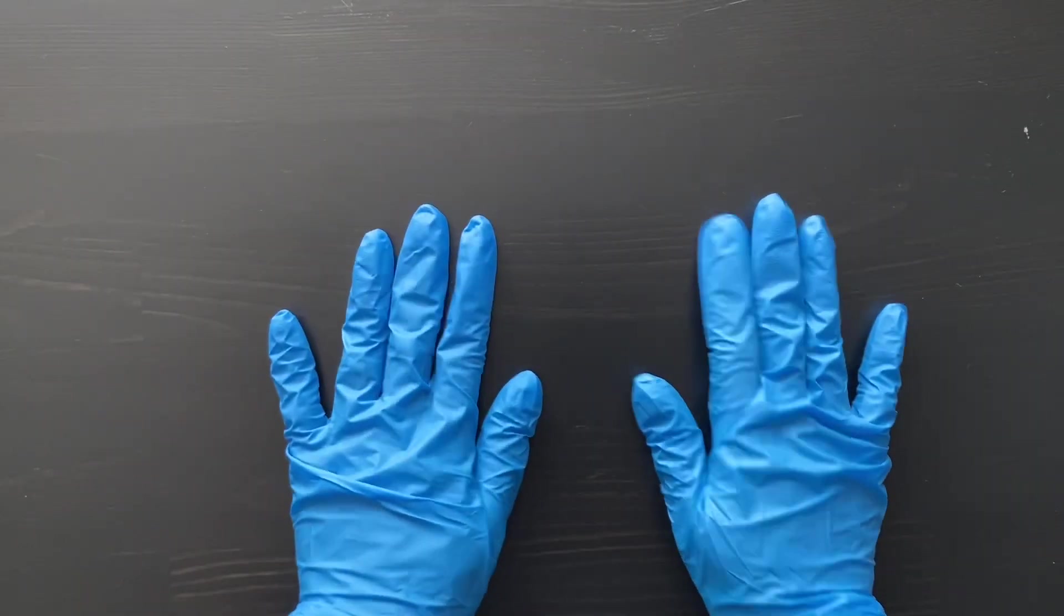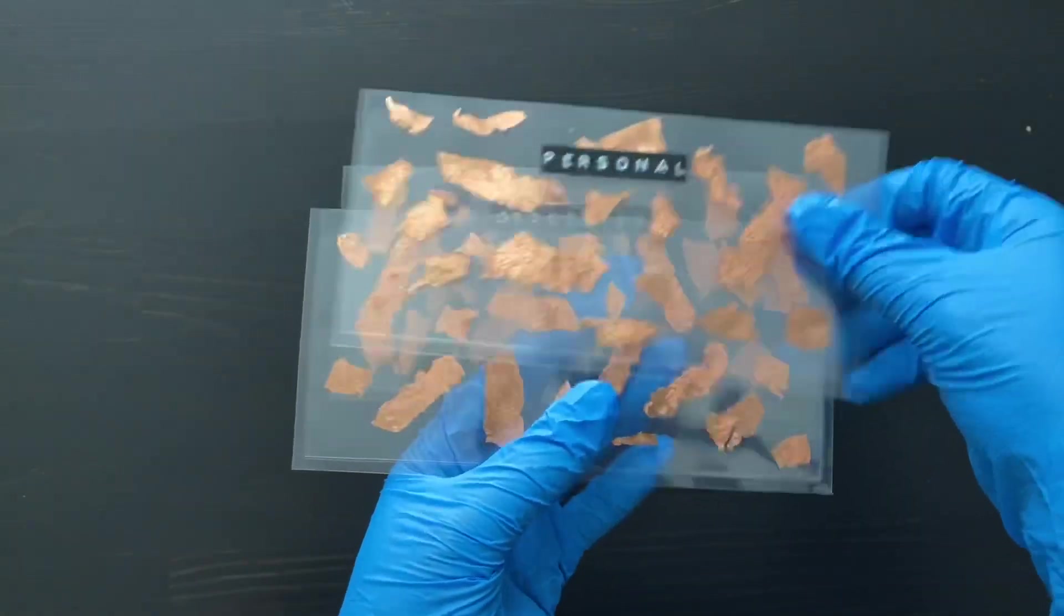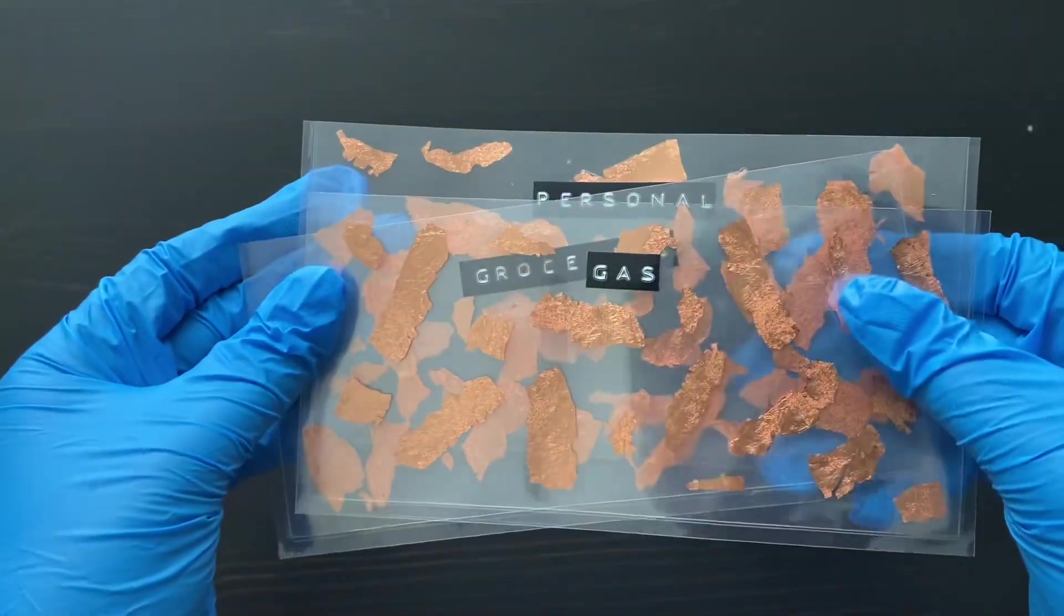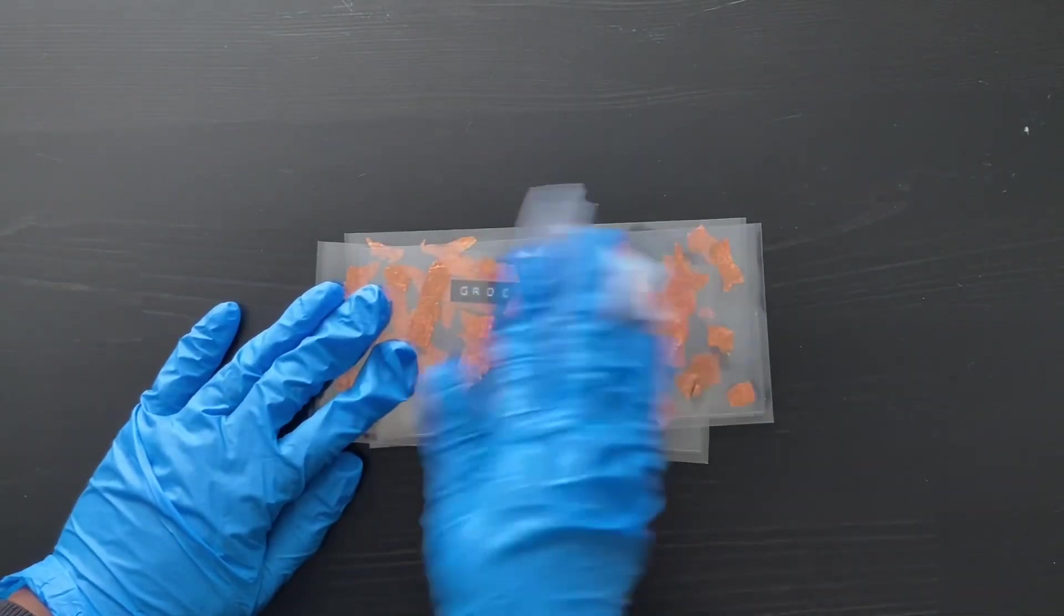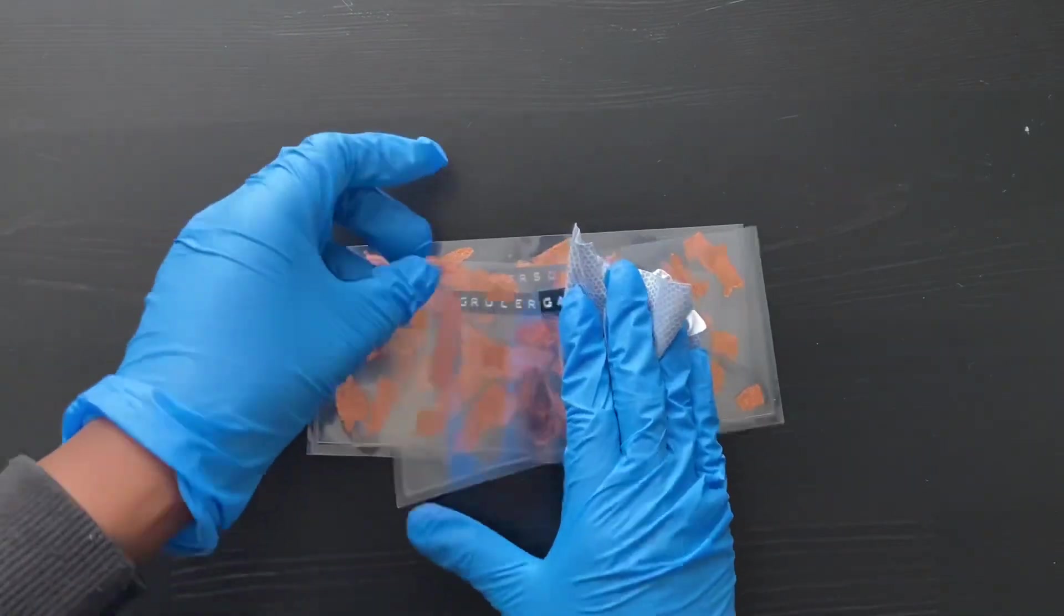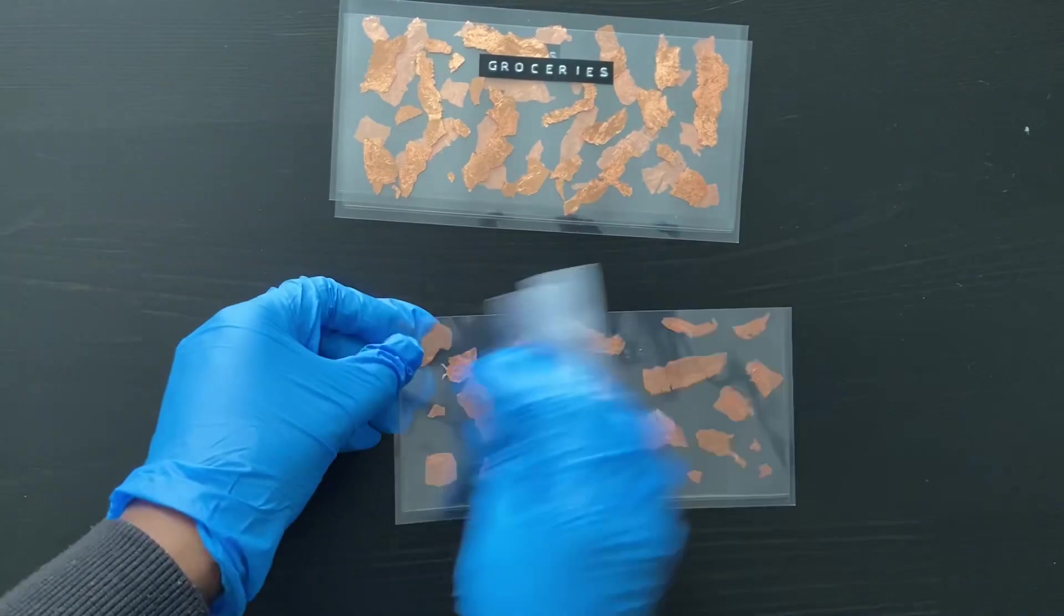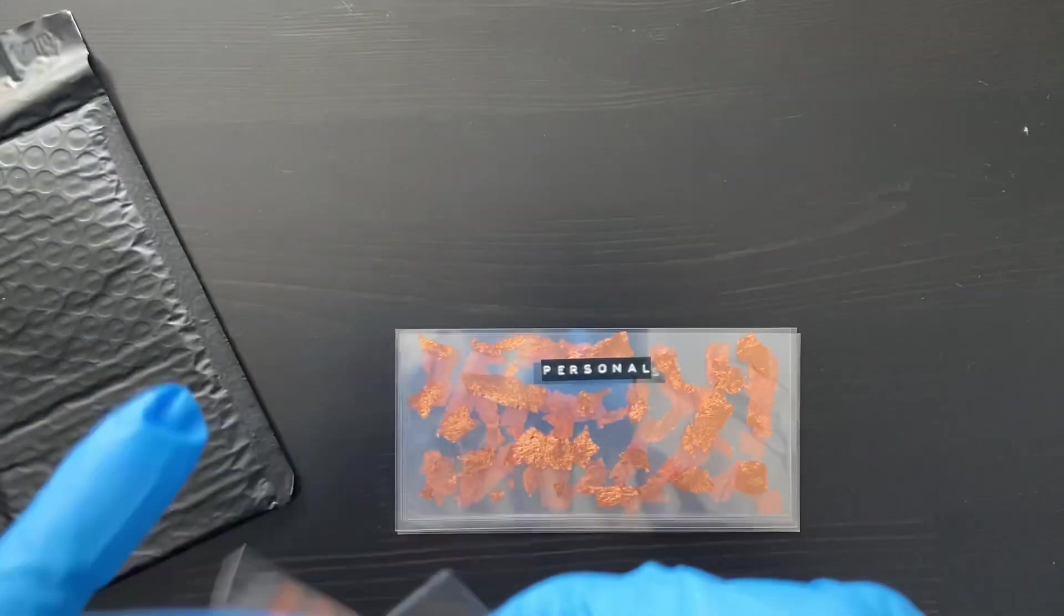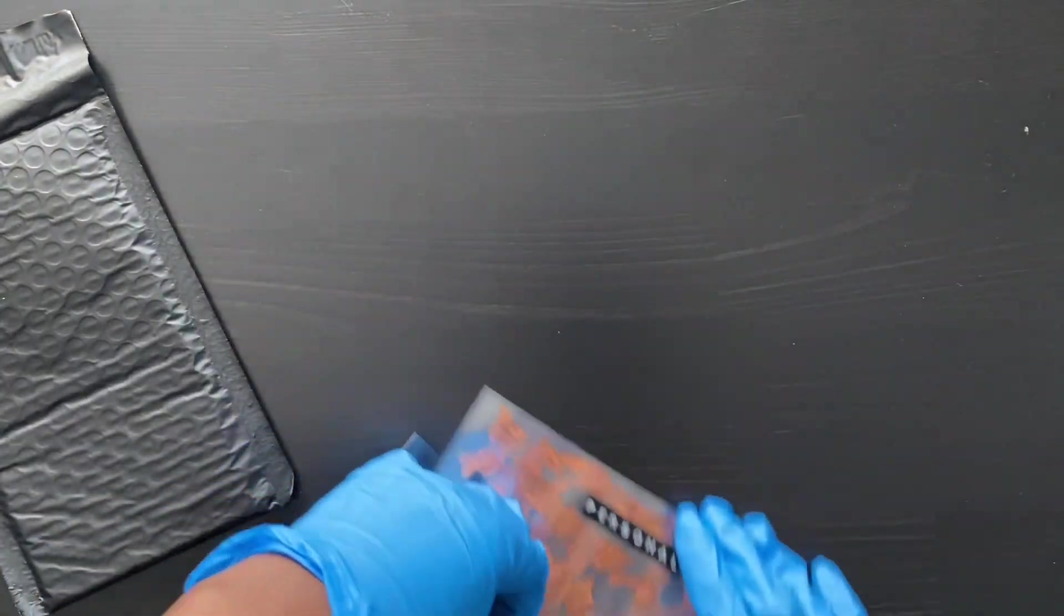Alright, our next order is going to be for Sav. Oh hi Sav, hey girl! She ordered one set of our rose gold foil cash envelopes and she wanted gas, groceries, and personal. You already know, clean it up real good so it's ready to be used. Sav and I connected on TikTok and she's actually from my hometown, so it definitely made me super happy to connect with someone that's from where I grew up.